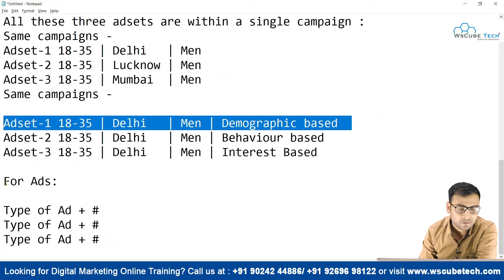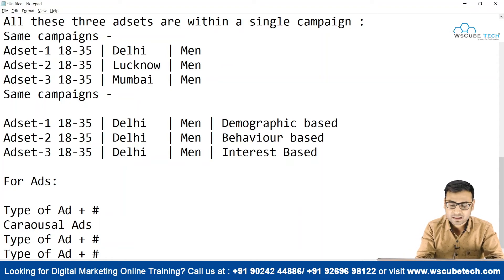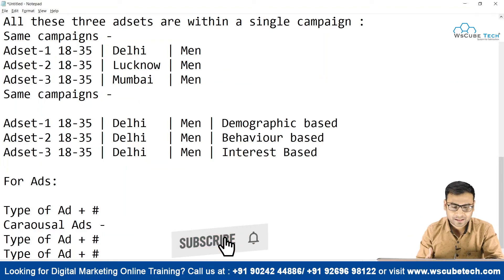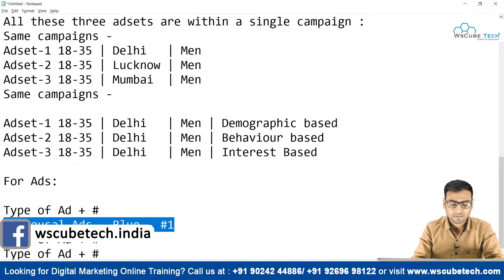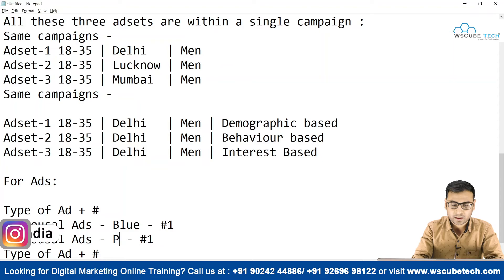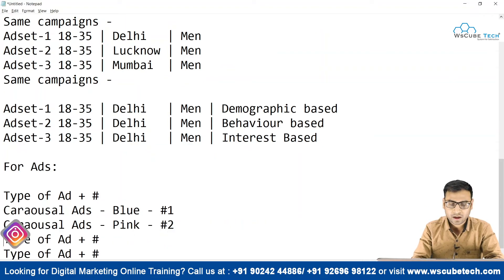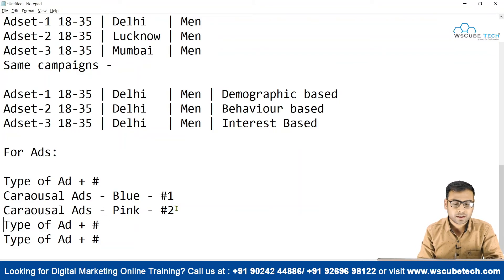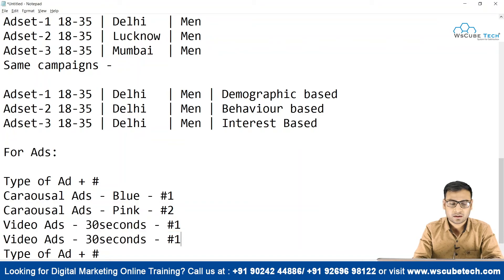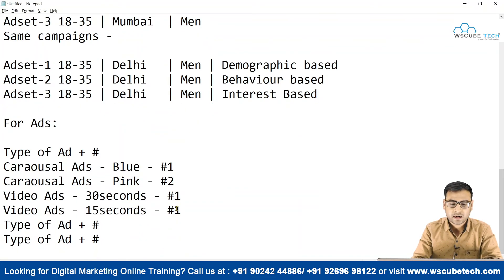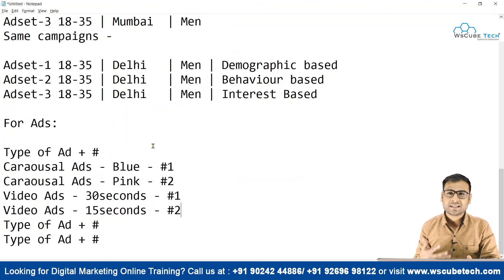For naming ads, we write the type of ad and then a number. If we are running carousel ads, we write 'Carousel Ads' — and if something is identifiable, like the color, we can write 'Blue Color Carousel - Ad 1' or 'Pink Carousel - Ad 2'. For video ads, if one is 30 seconds we write '30 Seconds Video Ad - 1', and if another is 15 seconds we write '15 Seconds Video Ad - 2'.